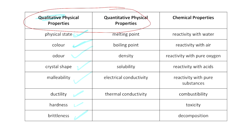For quantitative physical properties, these are properties that can all be measured — there is an actual number associated with each. They include melting point, boiling point, density (mass over volume), solubility, electrical conductivity, and thermal conductivity.